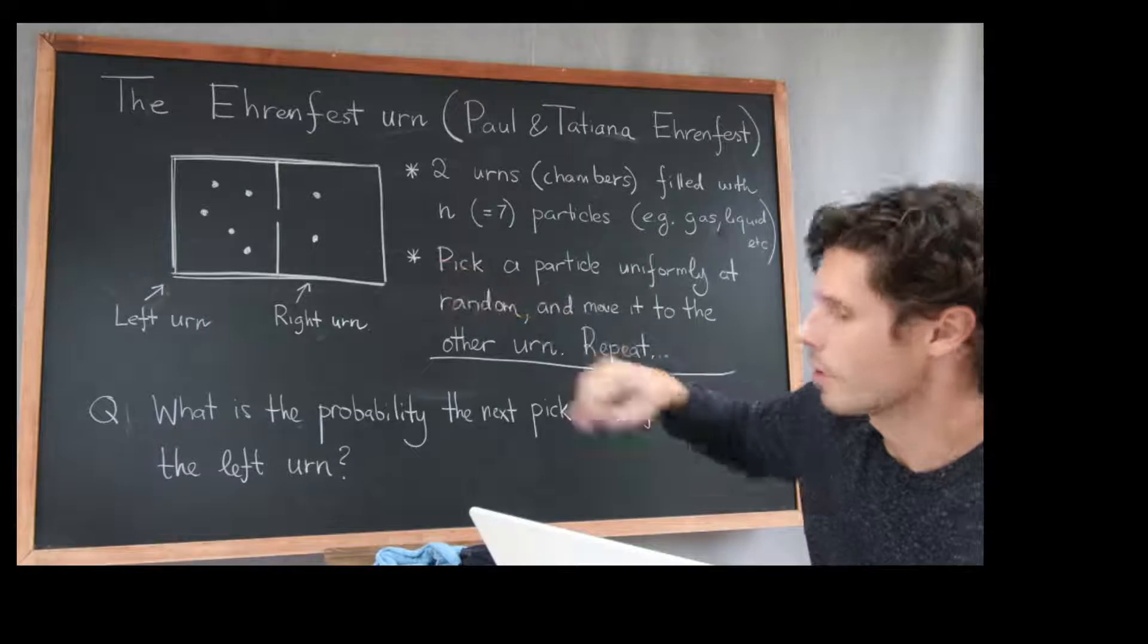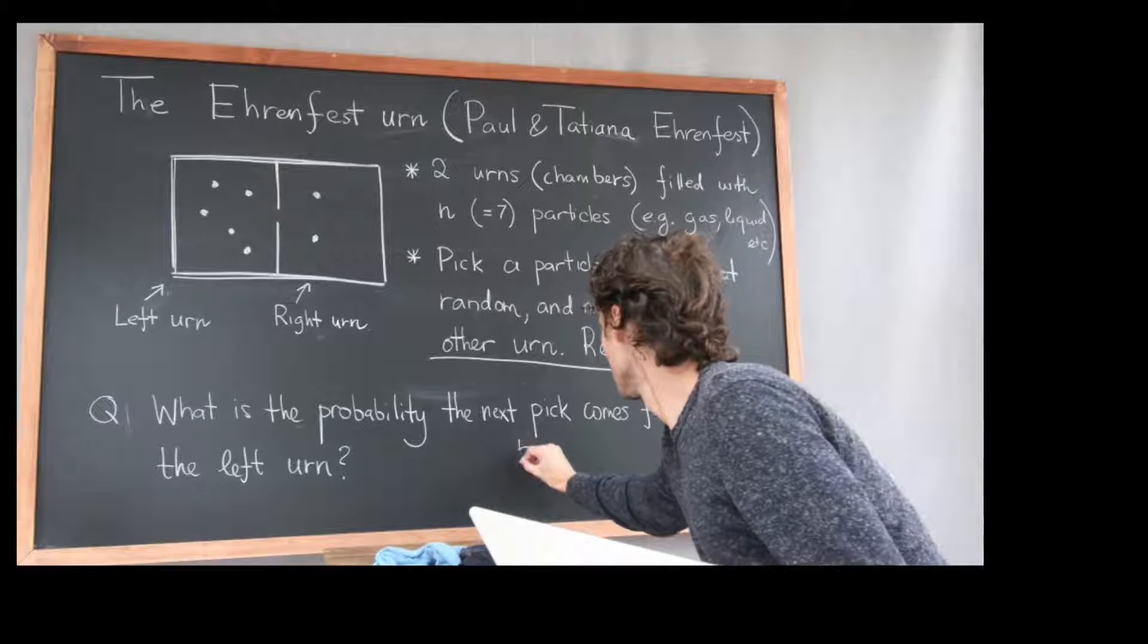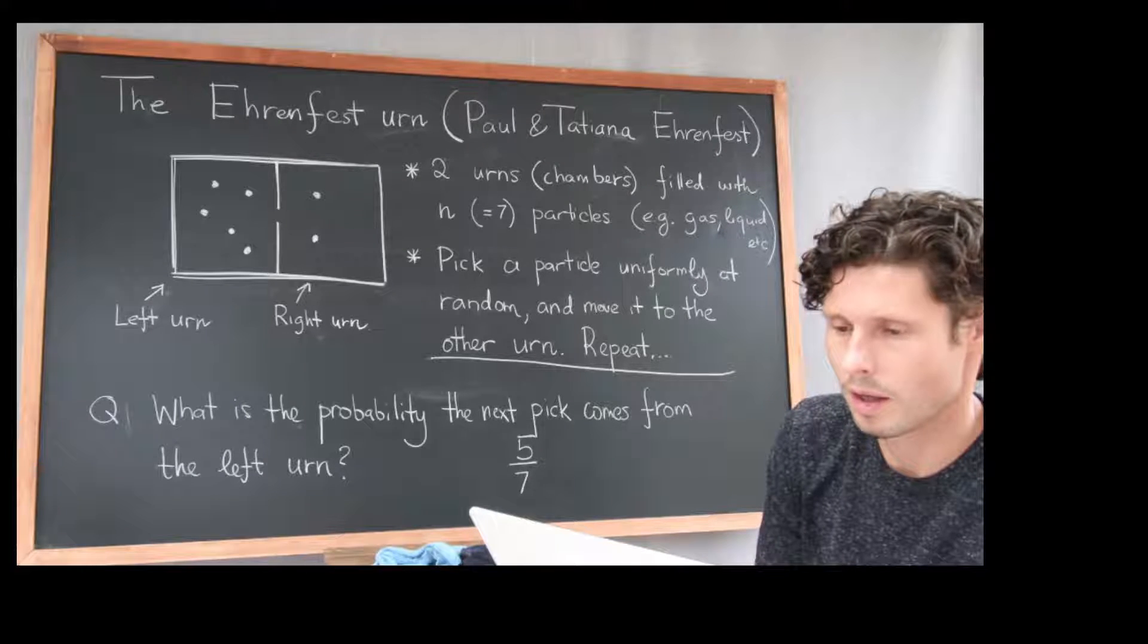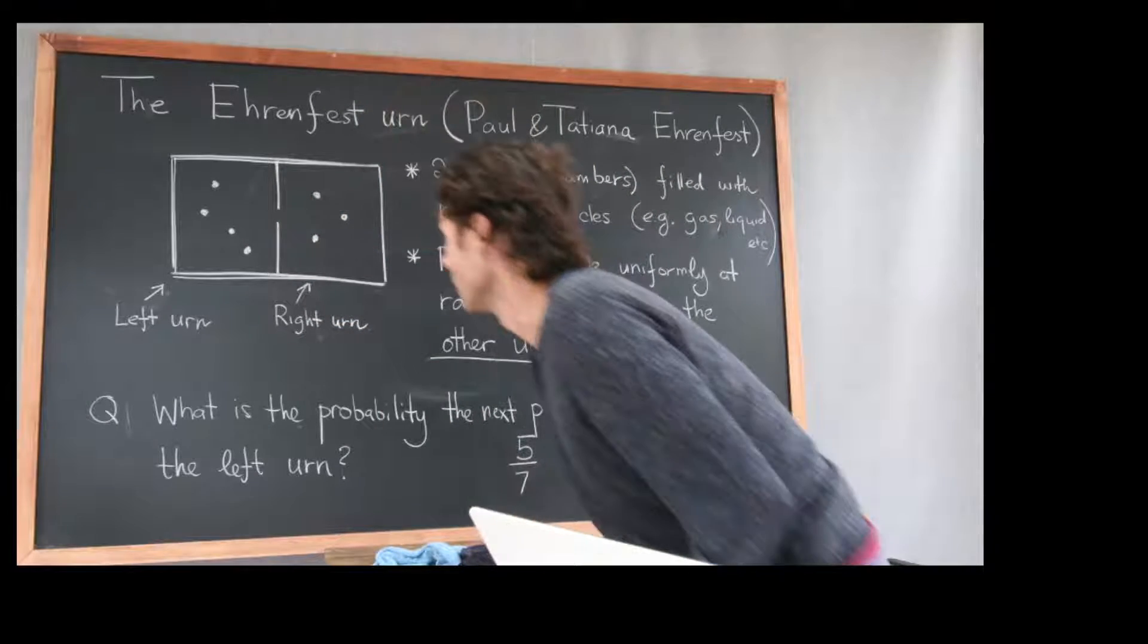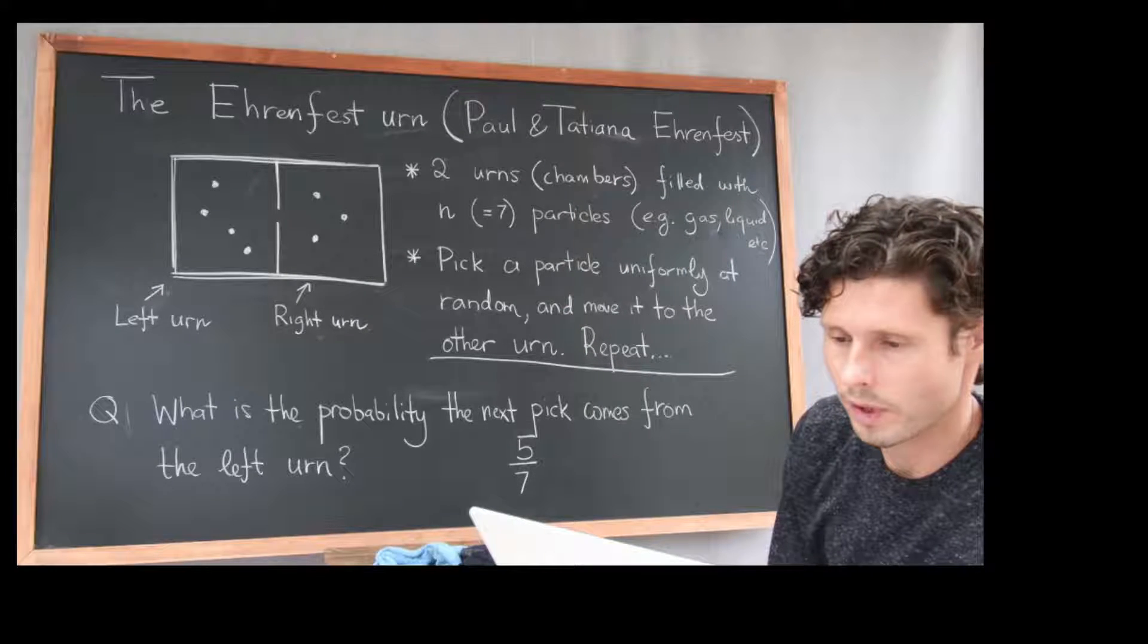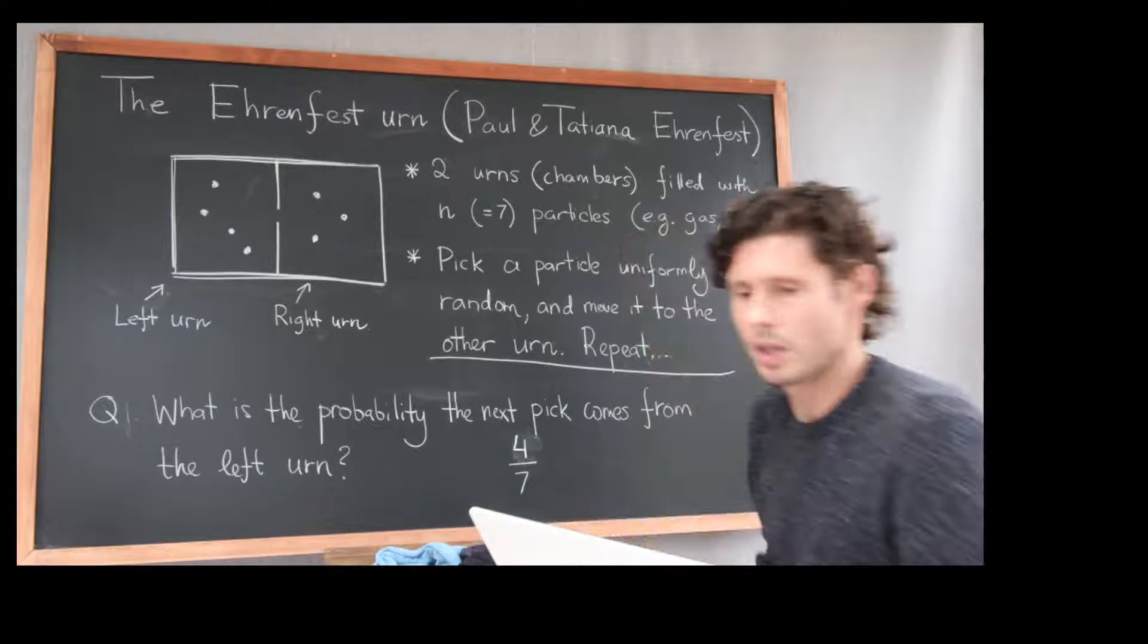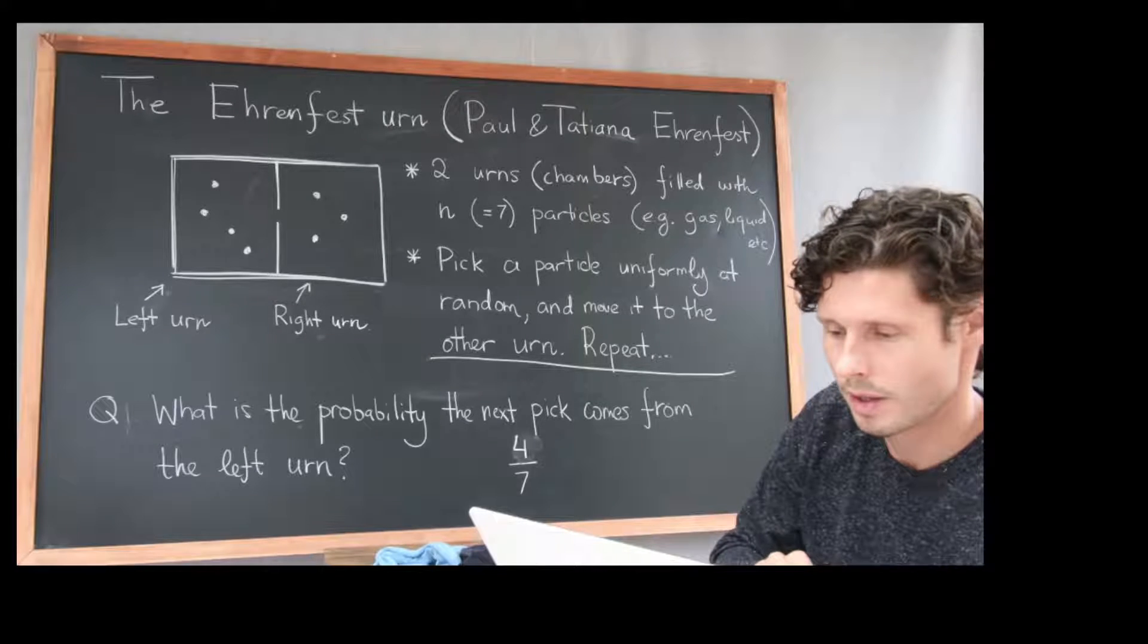There are right now five particles on the left and two on the right and there are seven total. So five over seven would be my answer. With probability five over seven I pick a particle on the left and I move it over to the right. And now this answer all of a sudden became not correct because now there are four on the left and three on the right, so now it would be four over seven. Okay, let's end this video on, or end this segment on the right answer and we'll pick up on the next segment.